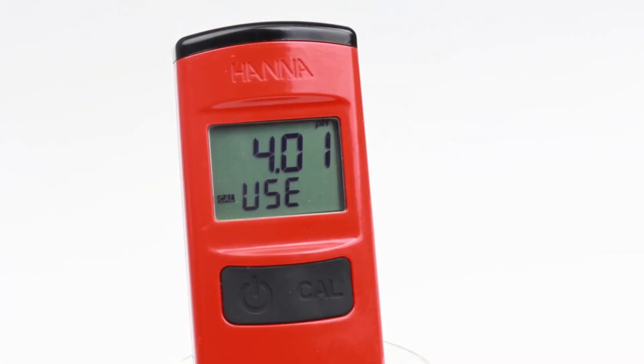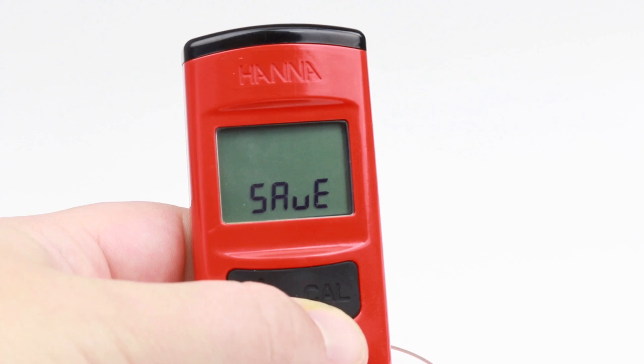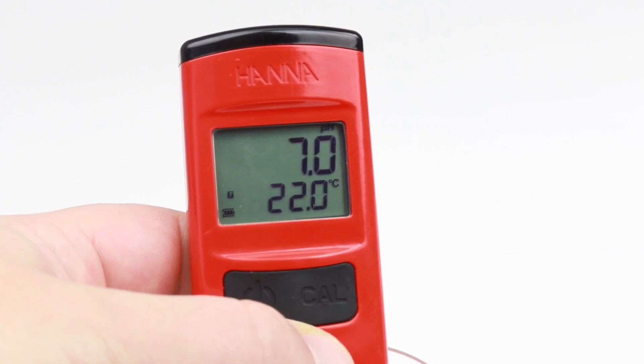For single-point calibration, press CAL key to exit. Save message is displayed and the meter returns to pH measurement mode.